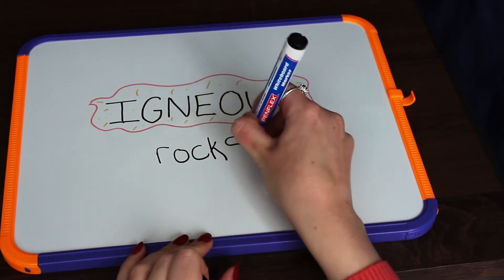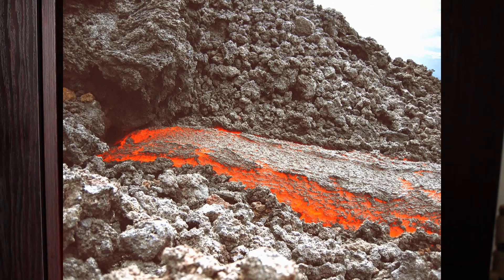Igneous rocks form when magma or lava cools down and solidifies. So when we think of igneous rocks we need to be thinking of magma and lava.